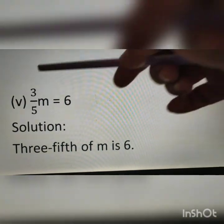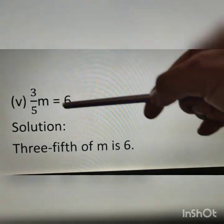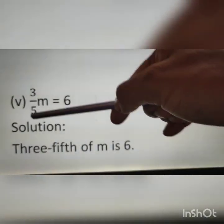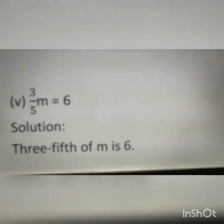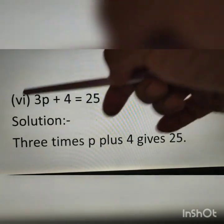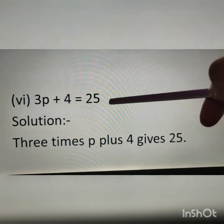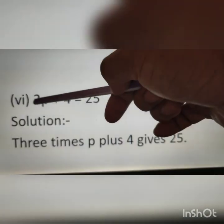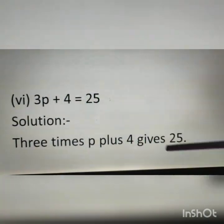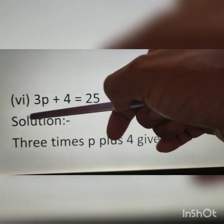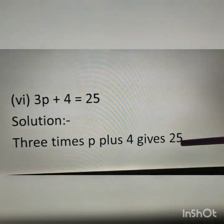Question number 5 (second part): 3 upon 5 into m is equal to 6. Solution: three-fifths of m is 6. Question number 6: 3p plus 4 is equal to 25. Here 3p means 3 times p, plus 4 is equal to 25. Solution: 3 times p plus 4 gives 25.